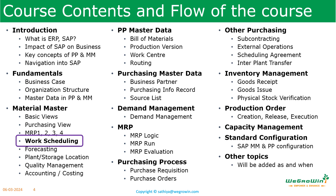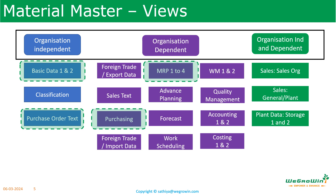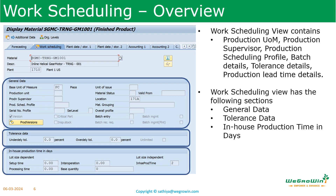We continue the course with the discussion on the work scheduling view. So far we created basic data 1 and basic data 2 views, which are organization independent. Then we created purchasing view, which is plant specific, and then we created the MRP views, which are plant specific and storage location specific. Now we will discuss the work scheduling view, which is a plant specific view. Work scheduling view controls how production execution should take place. It contains details related to different units of measures, production scheduler details, production scheduling and serial number profiles, production version indicator, batch management, tolerance details for production order confirmation, and how to maintain in-house production time details.